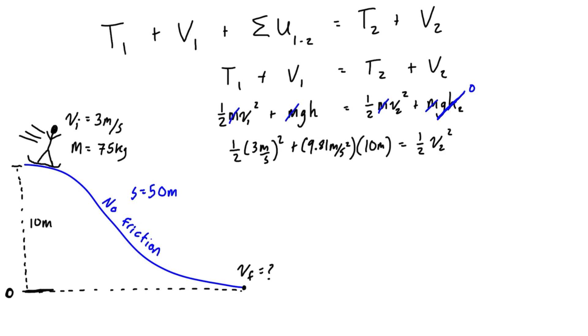All right, so we can simplify these a little bit. We're going to get 4.5 meters squared per second squared plus 98.1 meters squared per second squared.